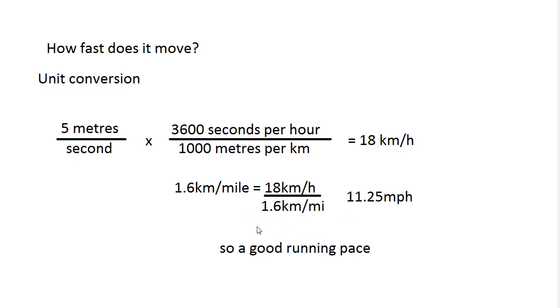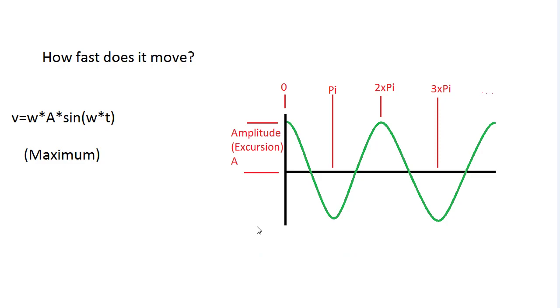Just how fast? The conversions are 18 kilometers per hour or 11.25 miles per hour — so it's about running pace, it's pretty quick. That's its average velocity.